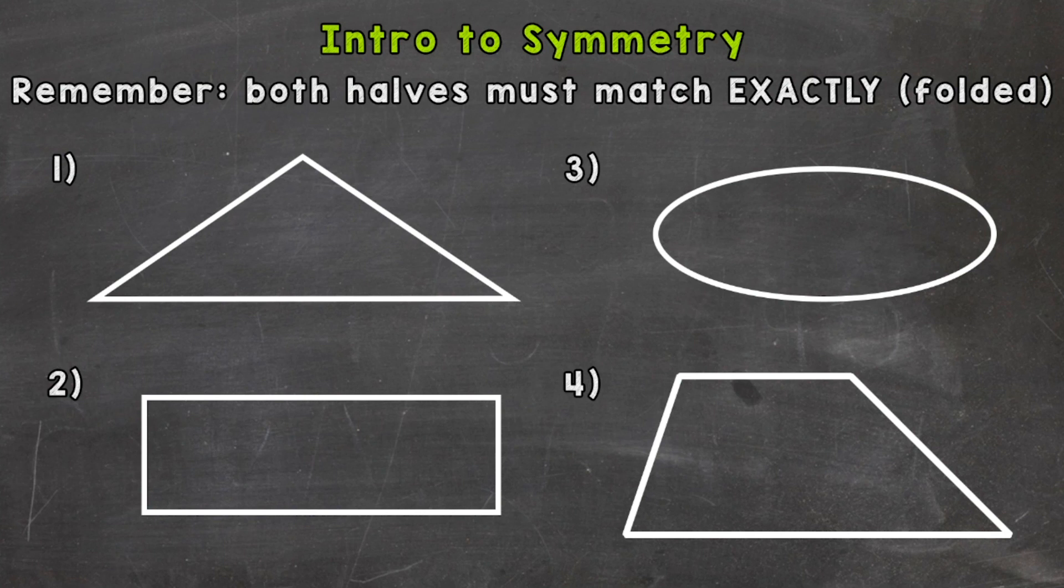We have four examples that we're going to go through here together to see if they are symmetrical. This is part one, so we're going to be working with basic shapes. In part two, we're going to take a look at some more complex shapes.